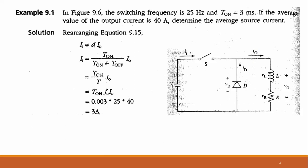To solve this, we use the equation: input current equals D times I_out, where D is the duty ratio, also equal to T_on divided by (T_on + T_off). Substituting, the input current equals T_on divided by (T_on + T_off), multiplied by the output current. This can also be written as T_on divided by T, times I_out, where T is the total switching period.